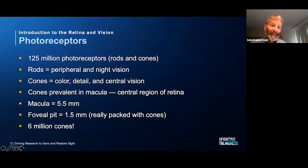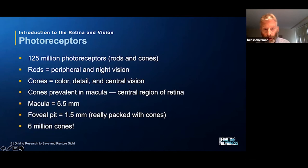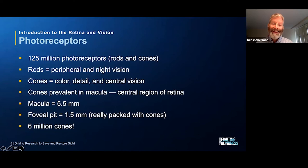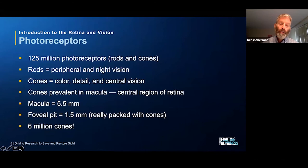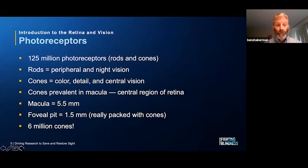Remarkably, each human retina has 125 million photoreceptors — or rods and cones. So there's an extraordinary amount of visual power packed in each retina. As I've already said, rods provide peripheral and night vision. Cones give us central vision, vision in lighted settings, and they enable us to perceive colors and details.